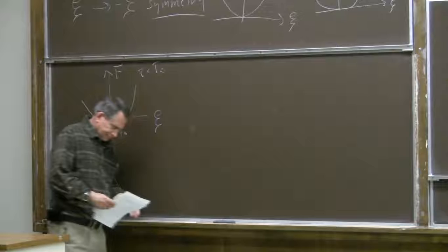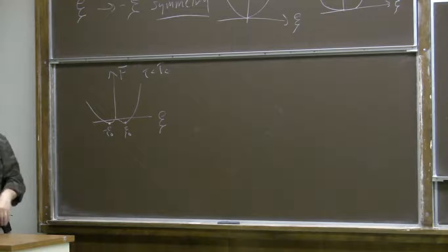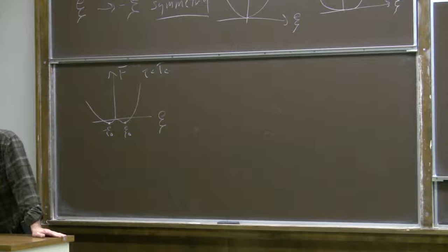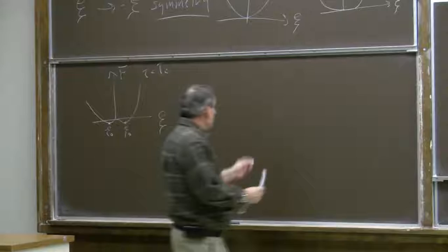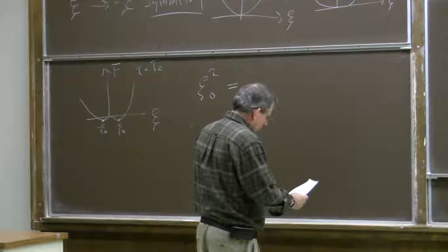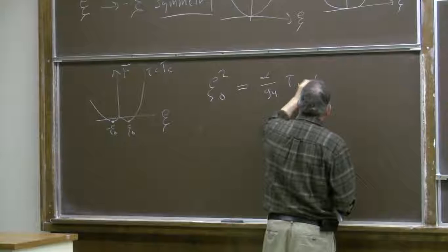You can ask how the value of the order parameter turns on when the temperature is just below the critical temperature, which we find by minimizing this function when tau is close to tau_c and a little bit less than tau_c. The minimum occurs when the square of the order parameter is linear in the deviation from the critical temperature.